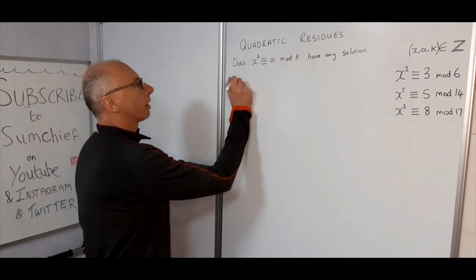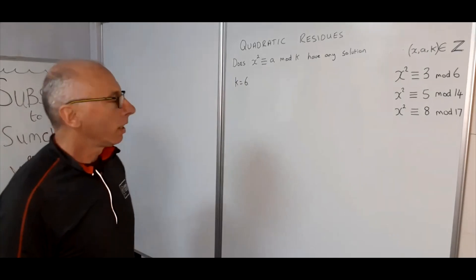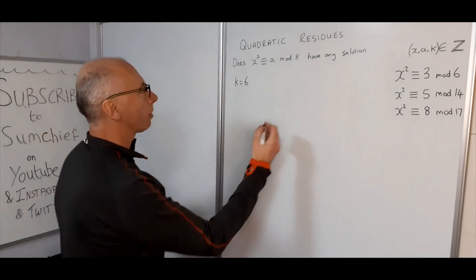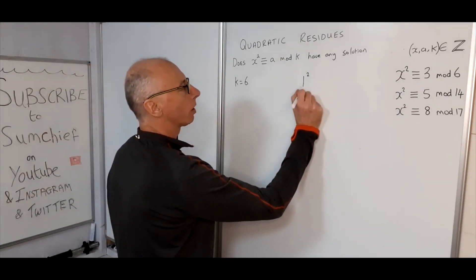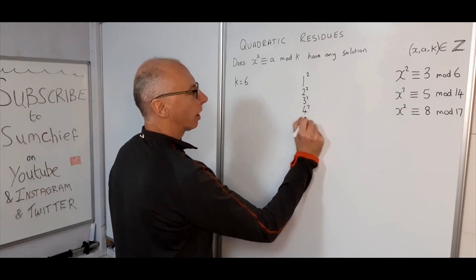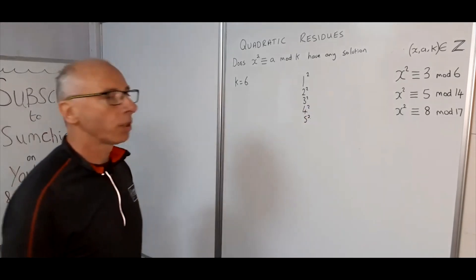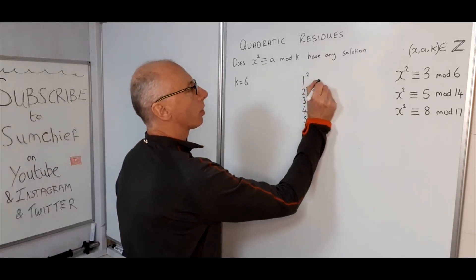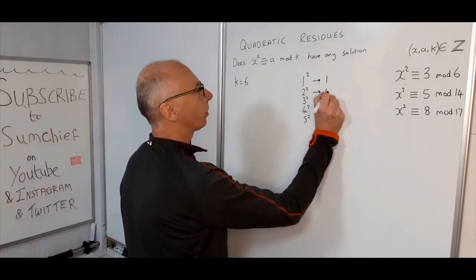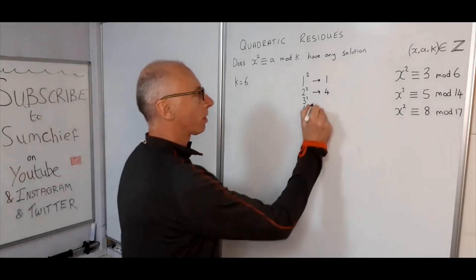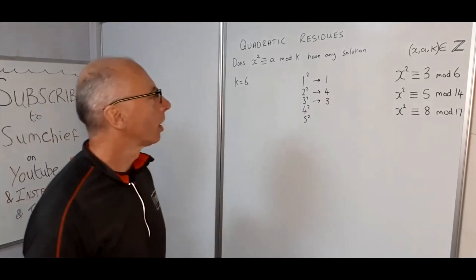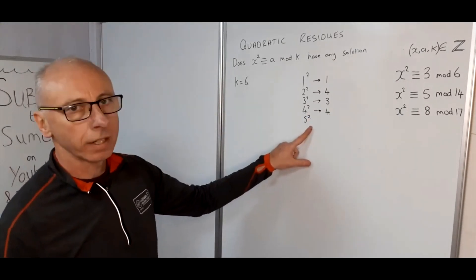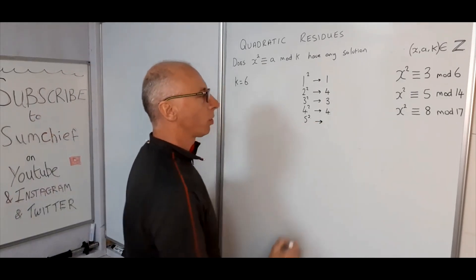For mod 6, K equals 6. Let's find the quadratic residues and non-residues of 6 by listing them in a table. Working in modulus 6: 1² gives 1, 2² gives 4, 3² gives 3, 4² = 16 gives 4, and 5² = 25 gives 1.